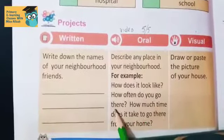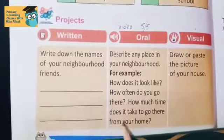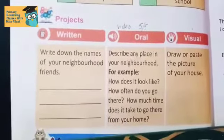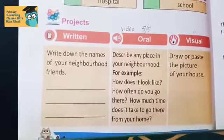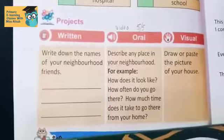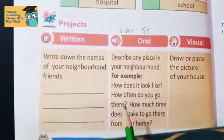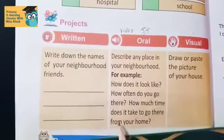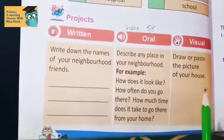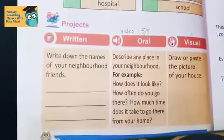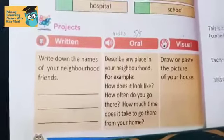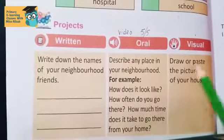Next question: how often do you go there, and how much time does it take to go there from your home? You have to tell how often you visit — is it weekly, monthly, or daily? And you have to tell how much time it takes from your home — maybe 5 minutes, 10 minutes, or 20 minutes. You have to make a video on this, and that will be worth five marks.